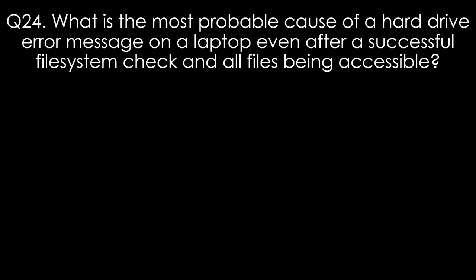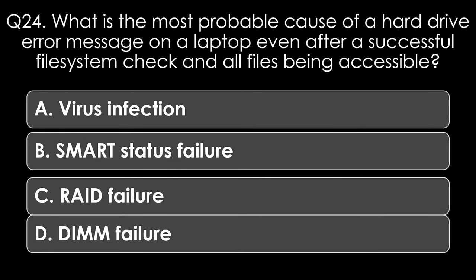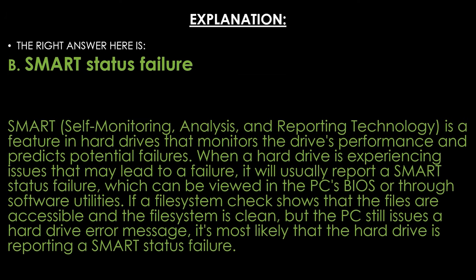Question twenty-four. What is the most probable cause of a hard drive error message on a laptop even after a successful file system check with all files accessible? Options: virus infection, SMART status failure, RAID failure, or DIMM failure. The right answer is SMART status failure. SMART monitors drive performance and predicts potential failures. If a file system check shows files are accessible and clean but the PC still issues a hard drive error message, it is most likely that the hard drive is reporting a SMART status failure, which can be viewed in the BIOS or through software utilities.